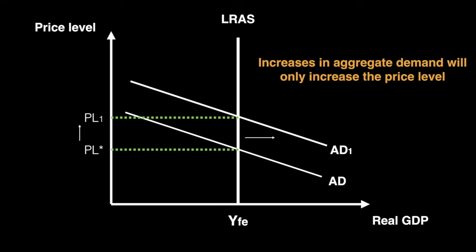In the case of the classical model, increases in aggregate demand only increase the price level in the long run. In addition, decreases result in a lowering of the price level. Both increases and decreases in aggregate demand result only in changes in the price level, but not changes in the level of real GDP.